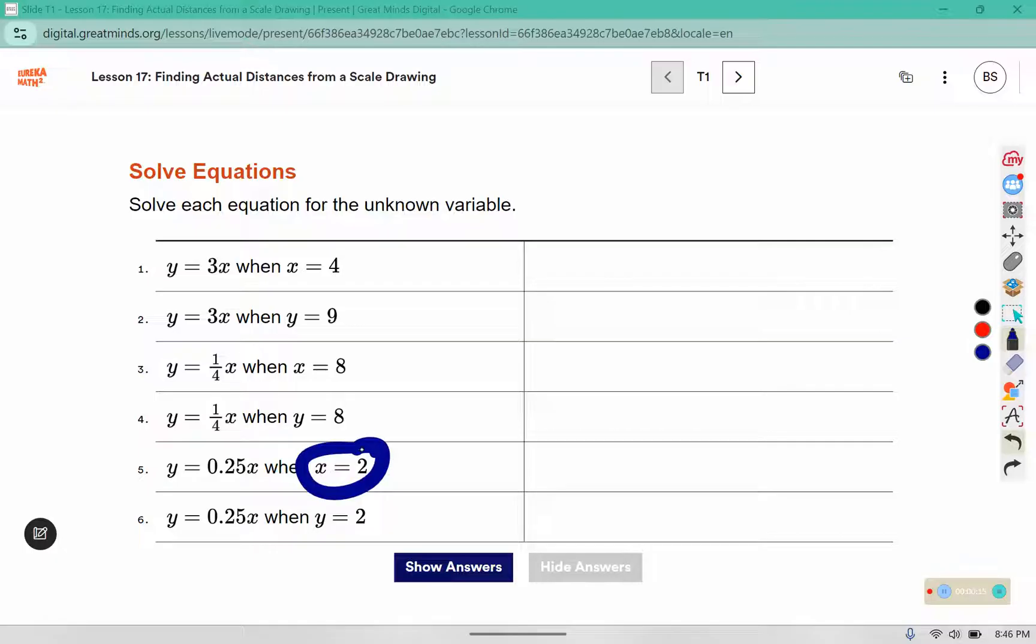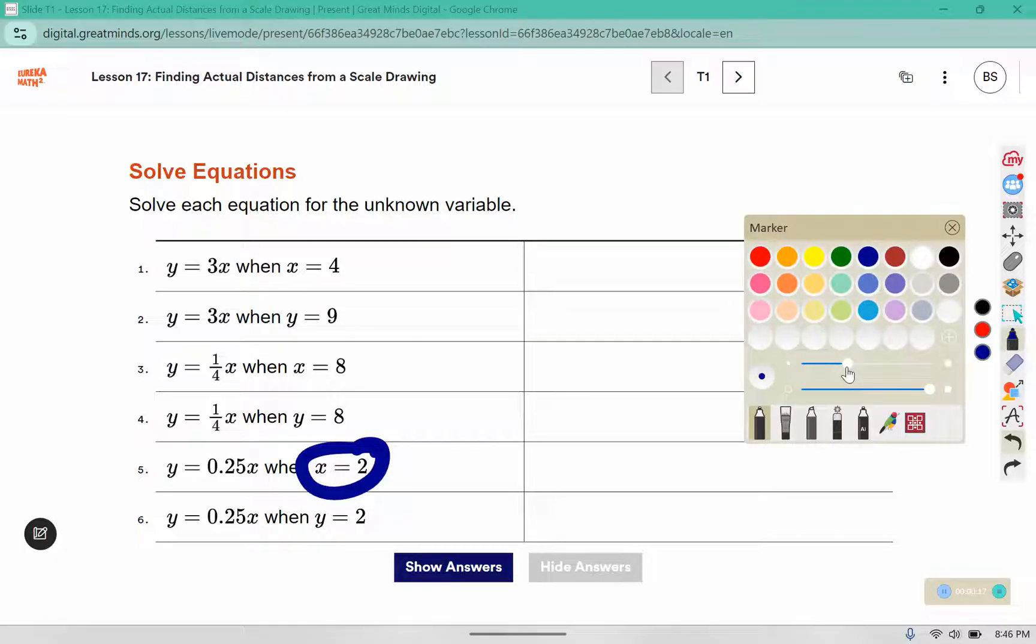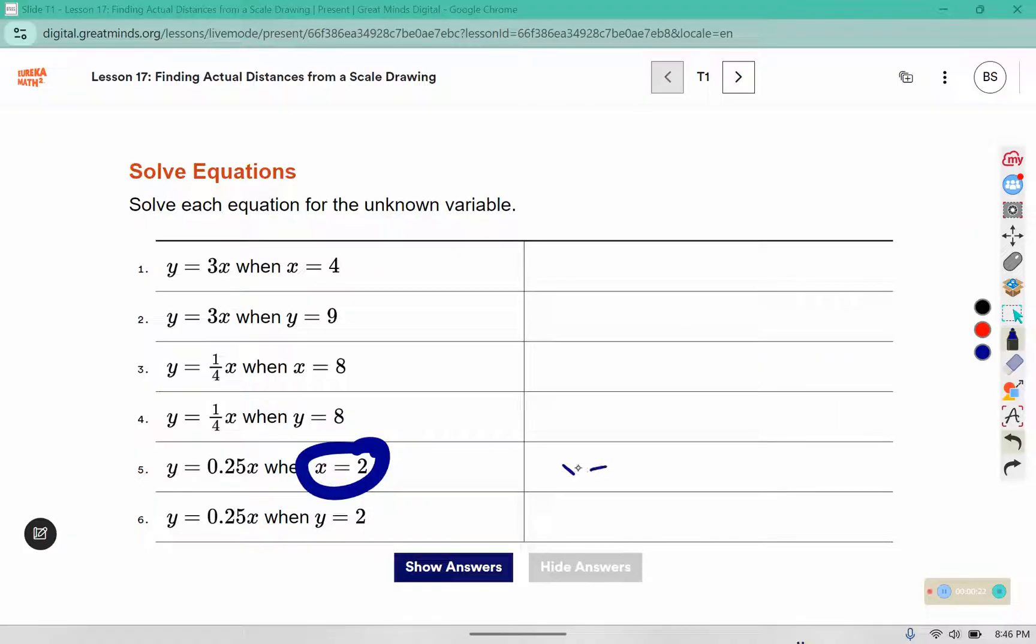Here when X is equal to 2, we're going to substitute in for the X. So Y equals 0.25 and we're replacing the X with a 2. Well, if I multiply 0.25 by 2, that gives me 0.5, so Y equals 0.5.